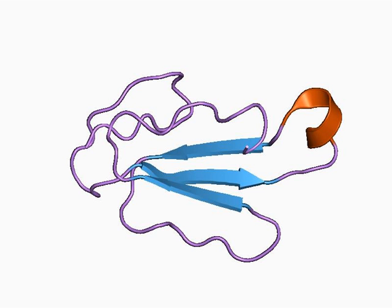Alpha-cobratoxin is a substance of the venom of certain Naja cobras. It is a nicotinic acetylcholine receptor antagonist which causes paralysis by preventing the binding of acetylcholine to the receptor.